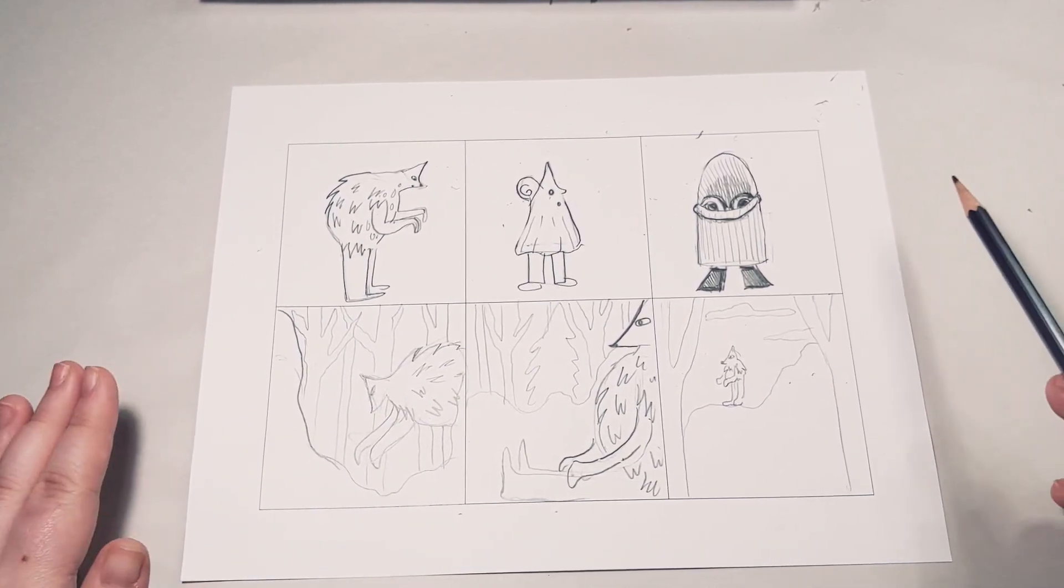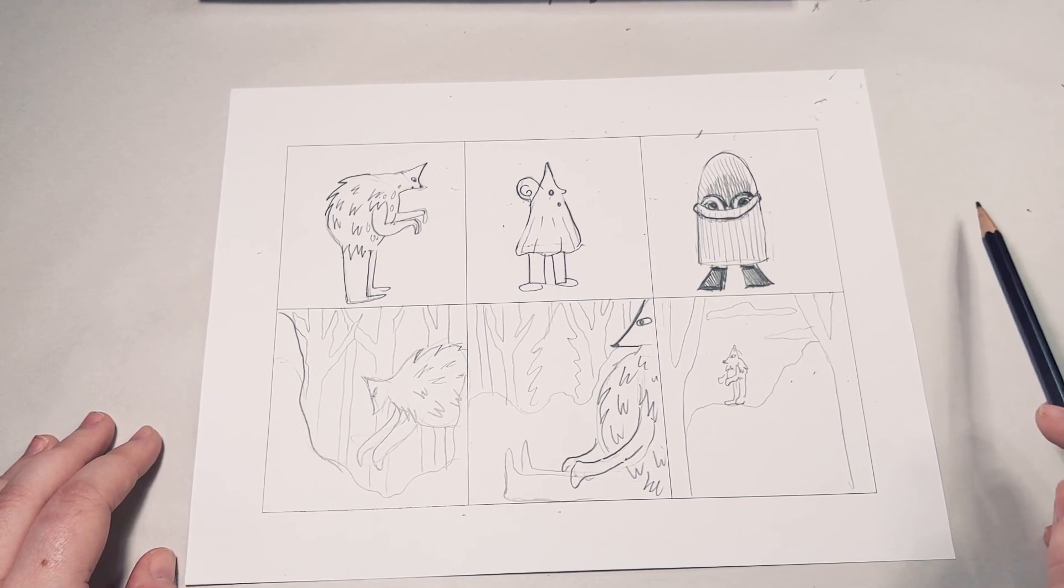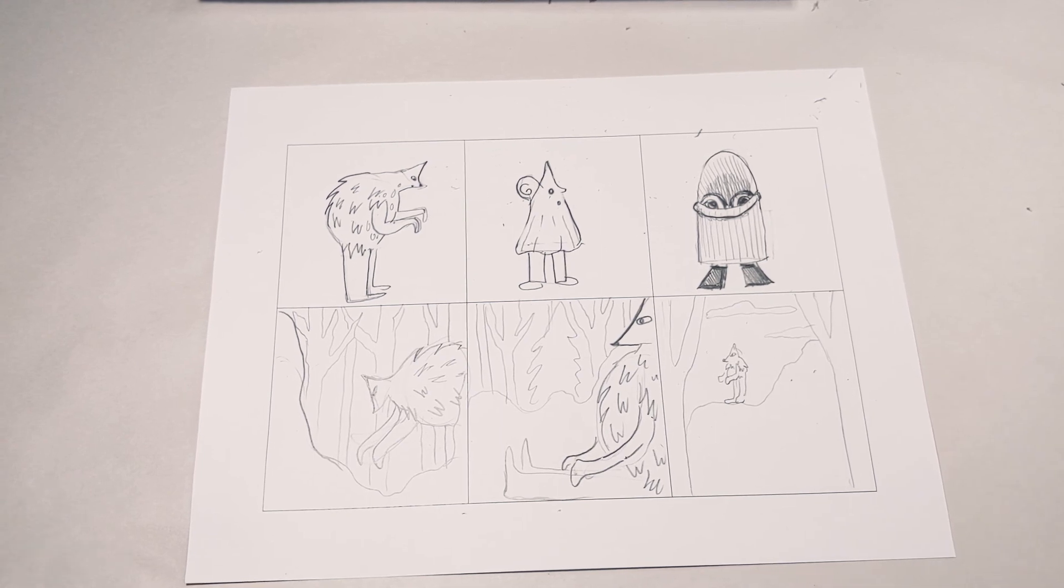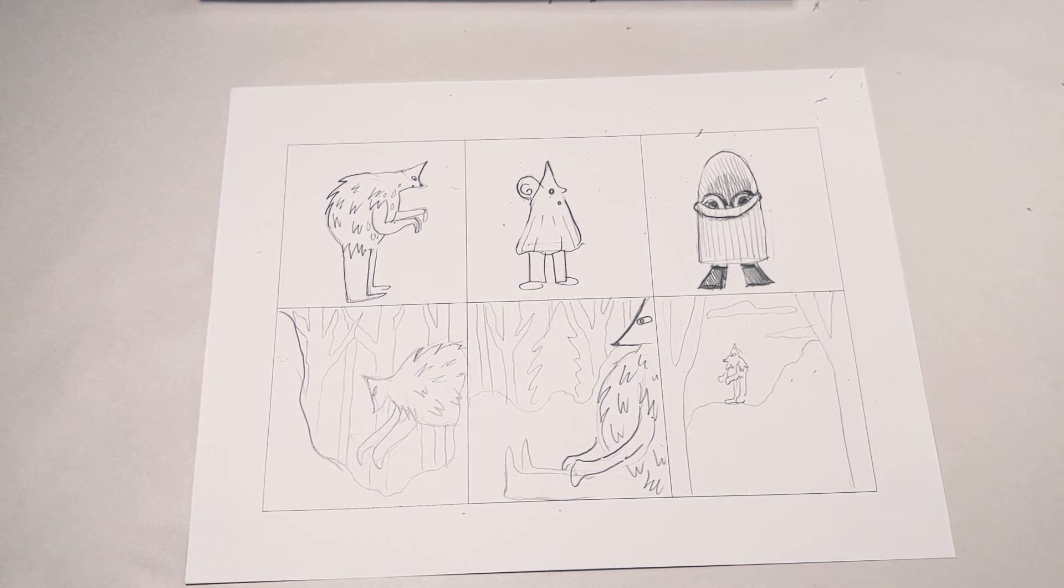So once you've filled in your six squares, choose one or two that you like, and you'll have your character, your environment, and the beginnings of the story that you're going to tell.